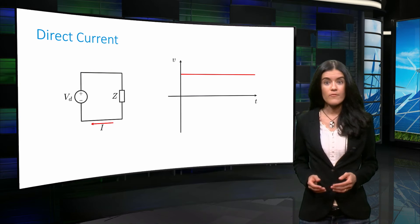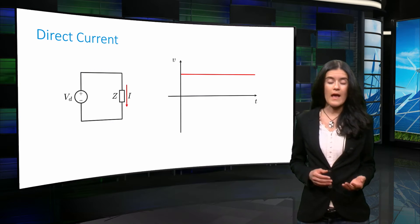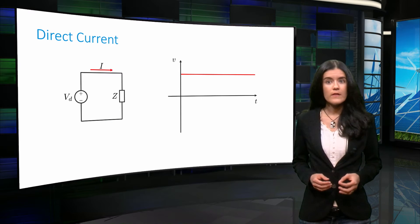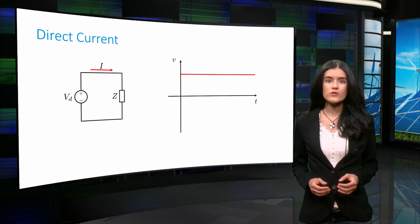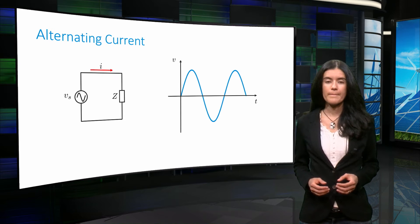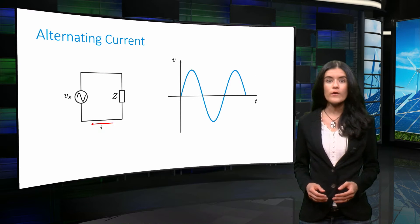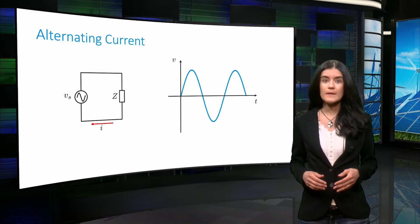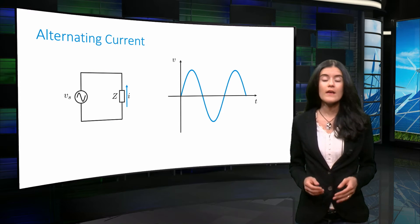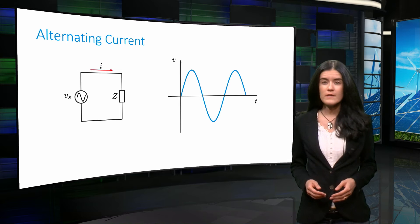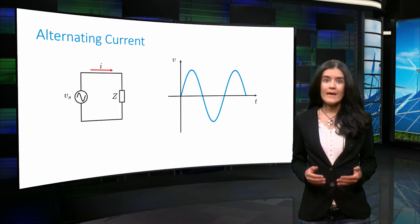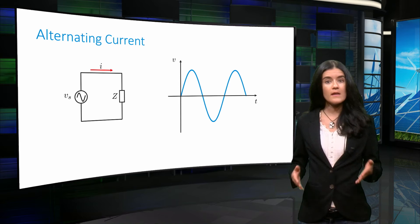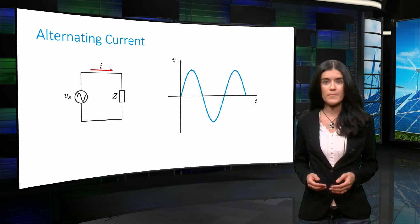Direct current, abbreviated as DC, can be defined as an electric current that flows only in one direction. Alternating current, abbreviated as AC, is defined as a periodic electric current that reverses direction. It can have different shapes. In traditional power systems, it has a sinusoidal shape.